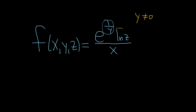What about this piece here? The natural log can only take positive values as inputs. You can't have the natural log of 0 and you can't have the natural log of a negative number — you can only plug in positive numbers into logs. So z must be positive.